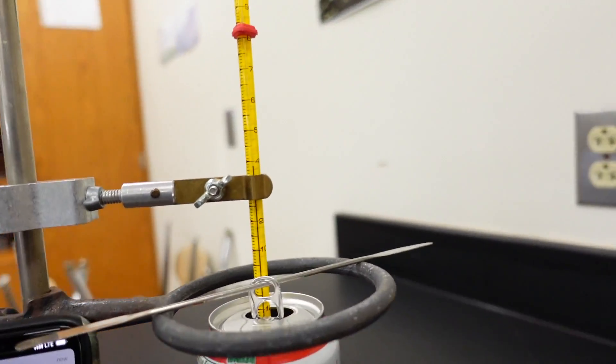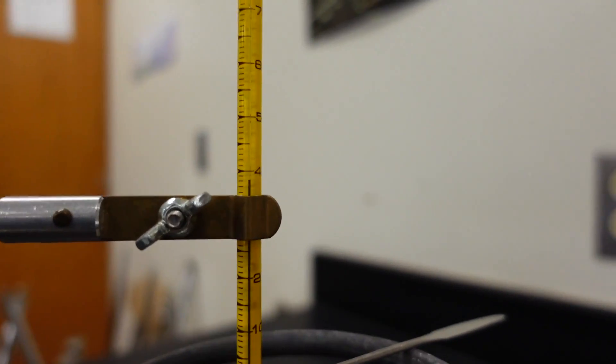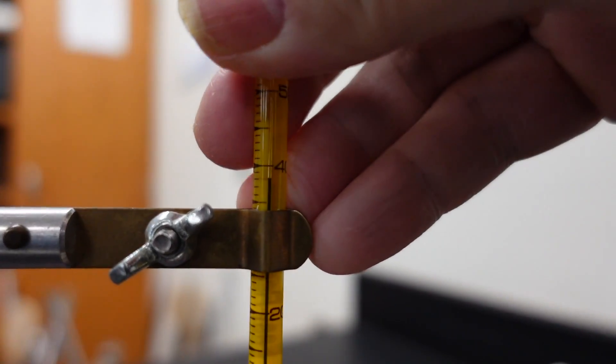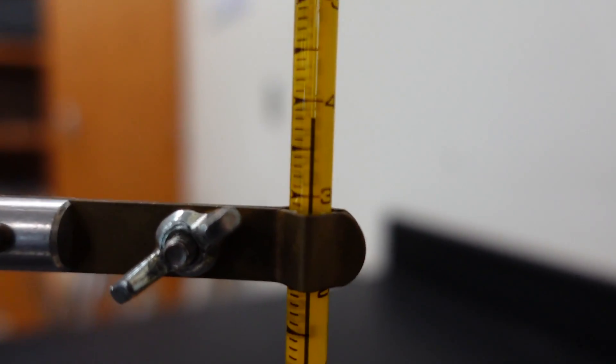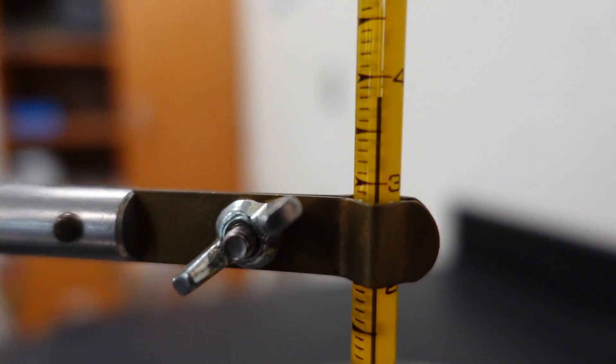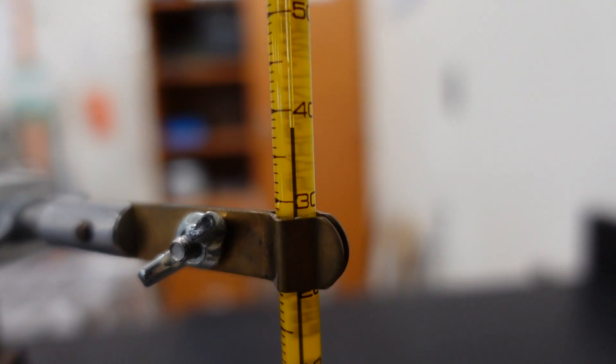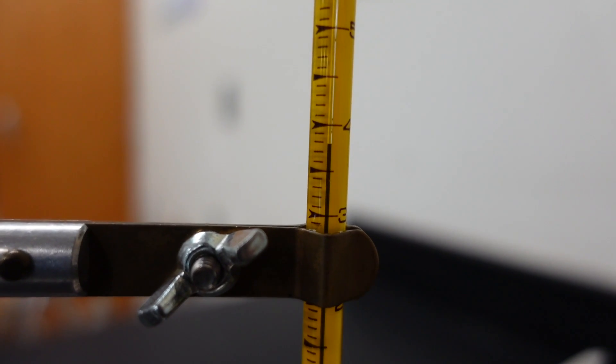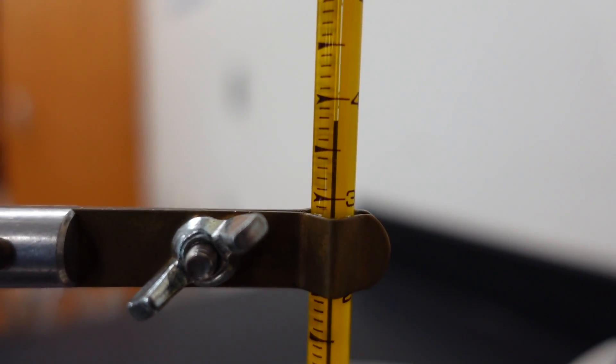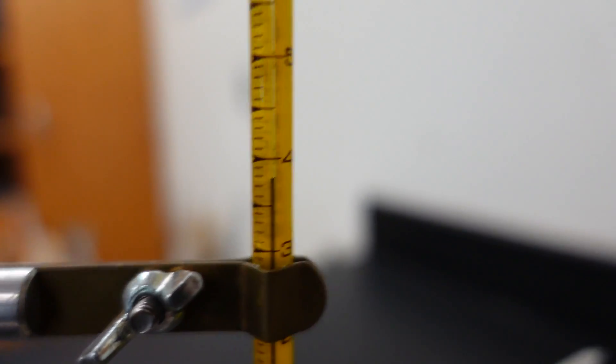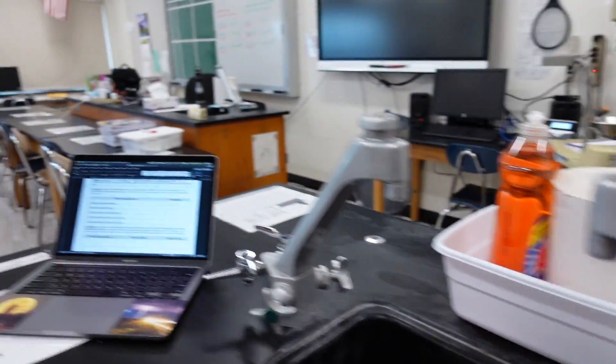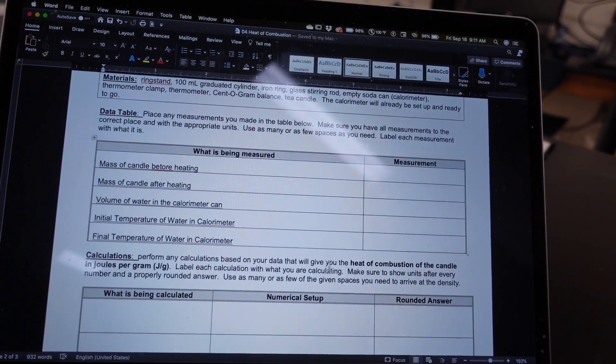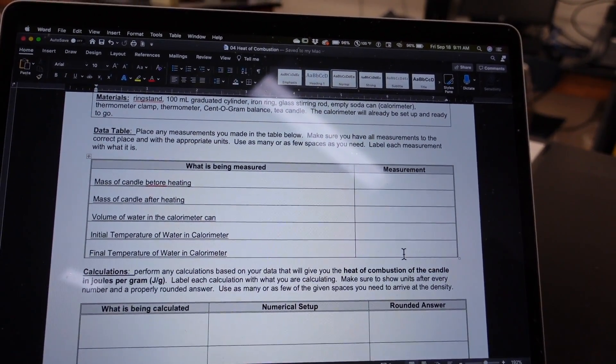Okay, now that 10 minutes have passed, let's read that thermometer again. Raise it up just a little bit so you can see it. There we go. Read it quickly before it drops. That's 40 and 30.